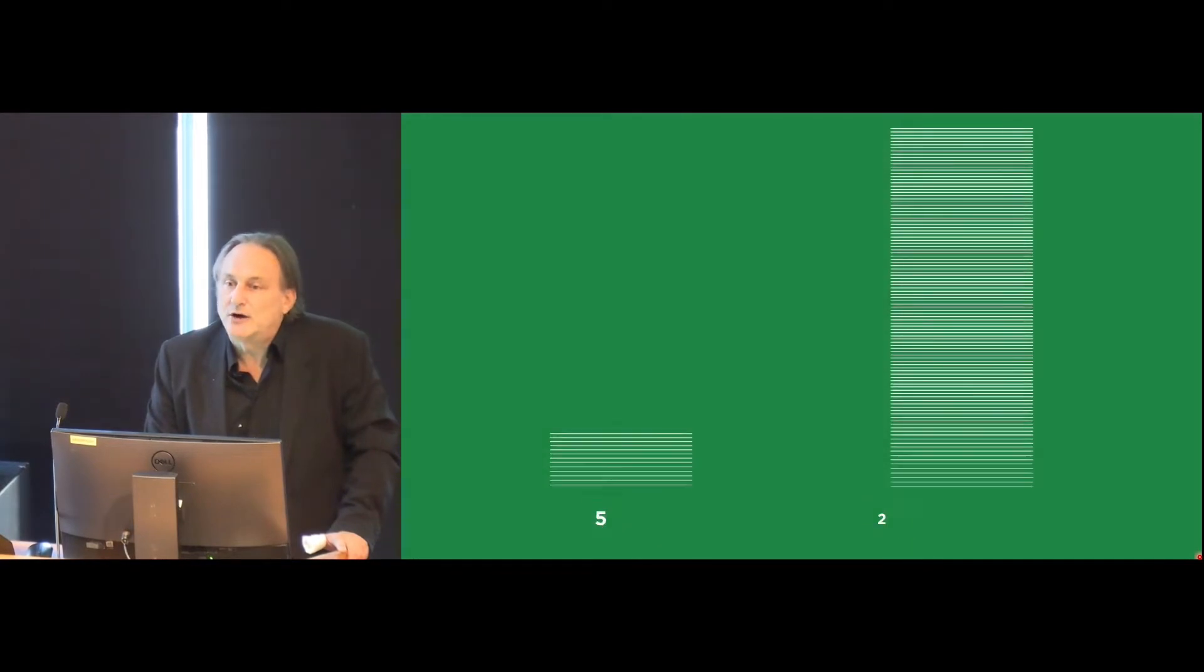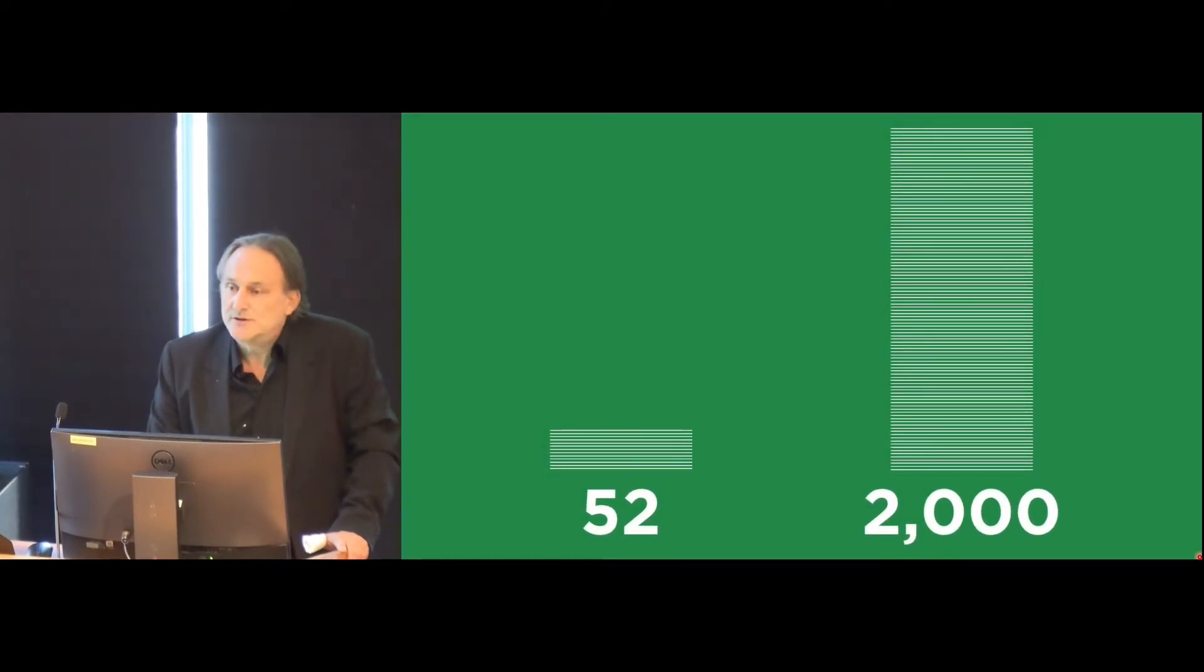Now turn that deck of cards of 52 cards into a deck of 2,000 cancer genes—about the number of genes that have been essentially a small or big effect on cancer. And now remove the limit of having only five cards. You could have three cards, you could have a hundred cards. So that number of possible mutational patterns you can get is now larger than the number of atoms in the universe.